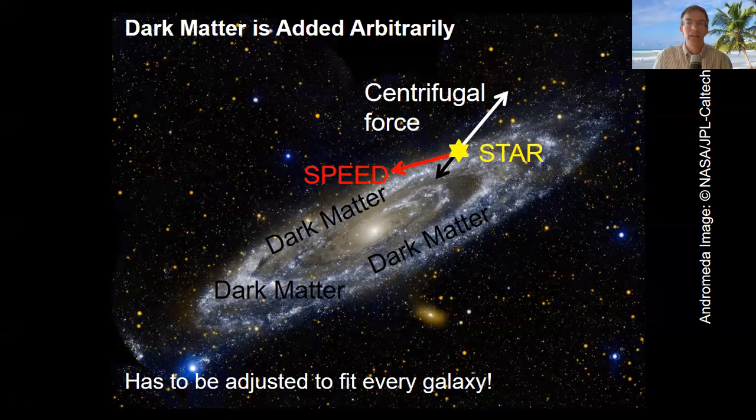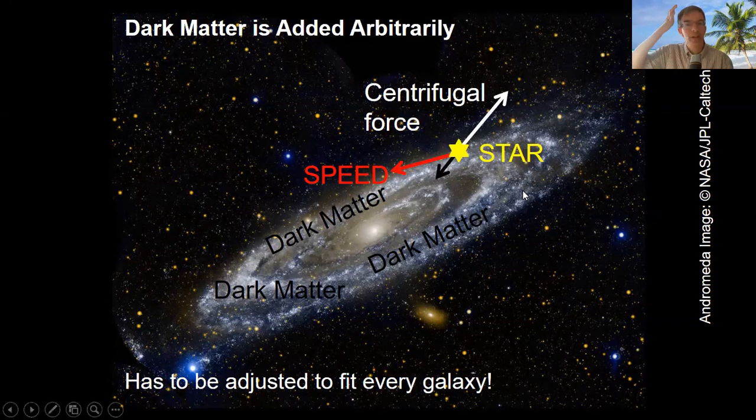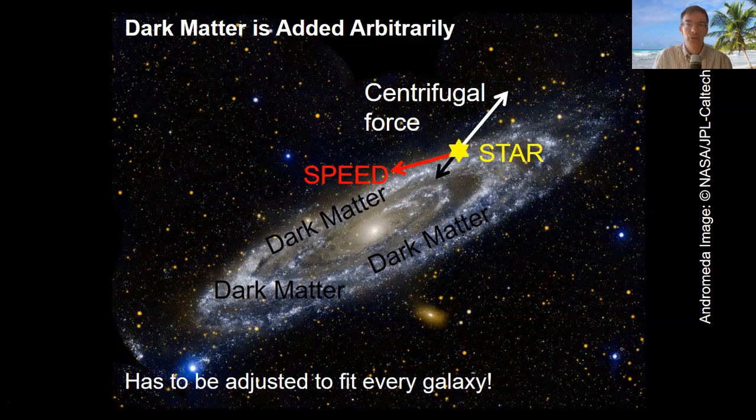This can be calculated by adding up all the numbers of stars in the galaxy and assuming that each one is like the sun. They can also look at the speed of the star in its orbit and calculate the centrifugal force on it. They've found that this is much larger. So they add dark matter to the galaxy arbitrarily to boost the gravitational force. But this has to be adjusted to fit every galaxy.